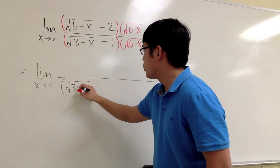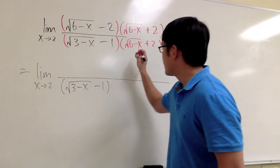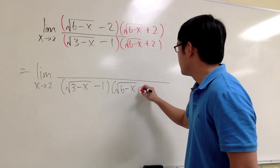Let's leave the denominator the same. So, I will just copy this down. Square root of 3 minus x minus 1 times square root of 6 minus x plus 2.